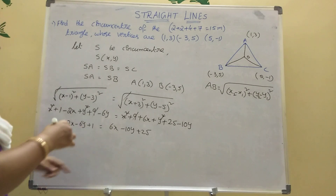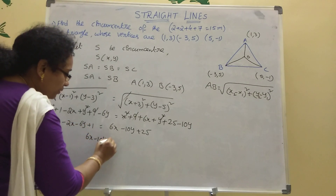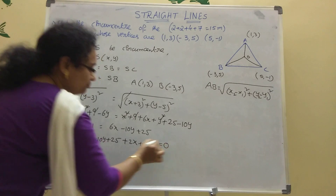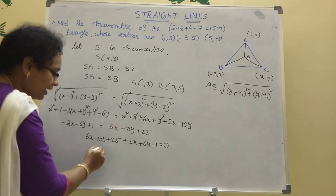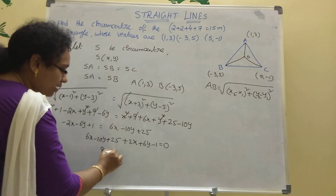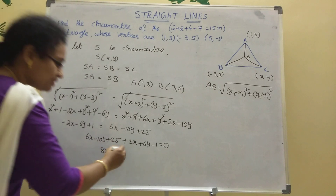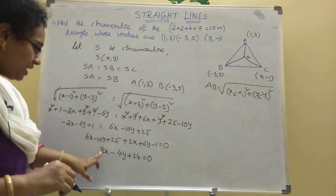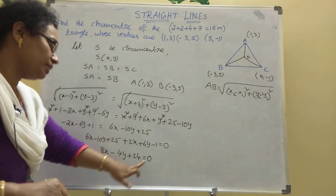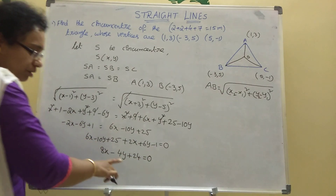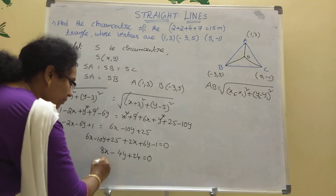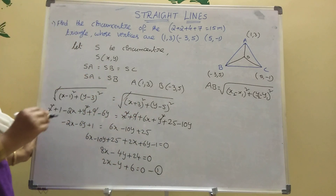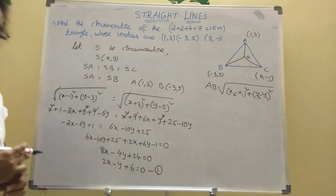Bringing all terms to one side: 6x - 10y + 25 + 2x + 6y - 1 = 0, which gives 8x - 4y + 24 = 0. Dividing throughout by 4, the first equation is: 2x - y + 6 = 0.